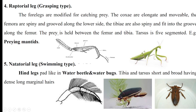Raptorial legs, also known as grasping type legs, are modified for catching prey. In praying mantids, the fore legs are modified for capturing prey. The femur and tibia possess spine-like structures — outgrowths from the integument or body wall — that help in gripping prey very tightly. These fore legs are not used for walking but only for capturing prey. Praying mantids are beneficial insects as they feed on other insects.